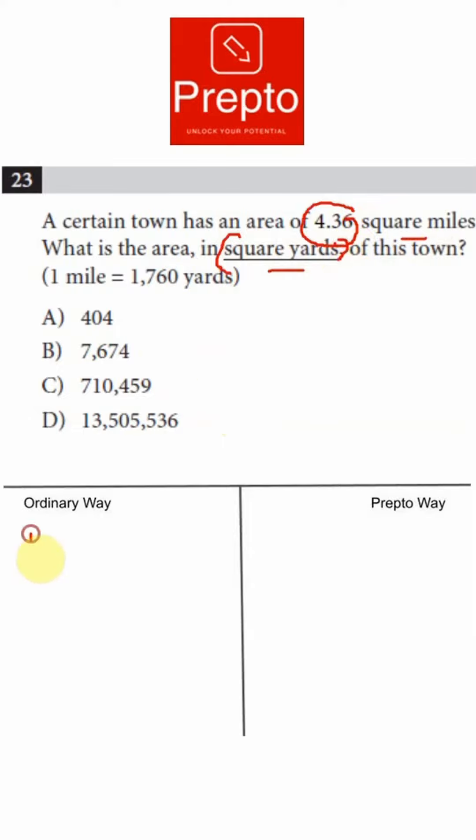So 1 mile given to you is 1760 square yards, which means 1 square mile will be 1760 squared, so into 1760. And you have 4.36 square miles, so you'll multiply this value with 4.36.